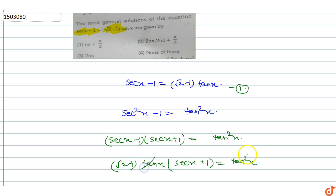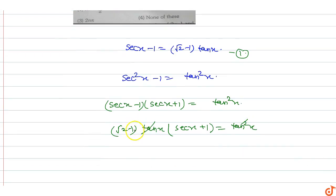Tan x cancels out, so sec x plus 1 equals tan x by root 2 minus 1. Rationalizing root 2 minus 1 by multiplying root 2 plus 1 into tan x.